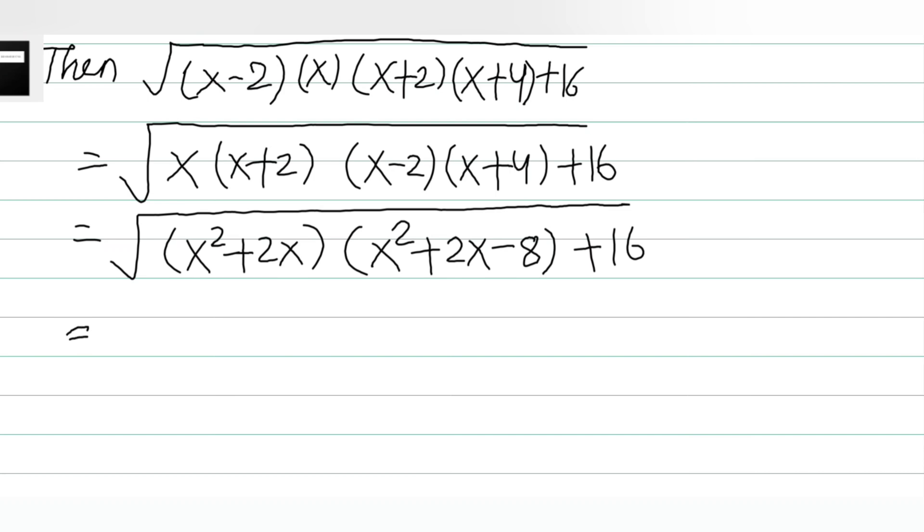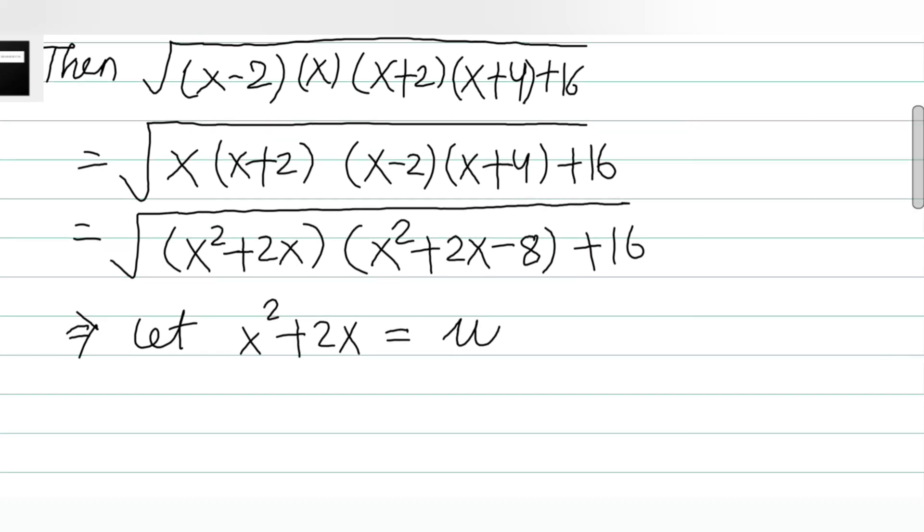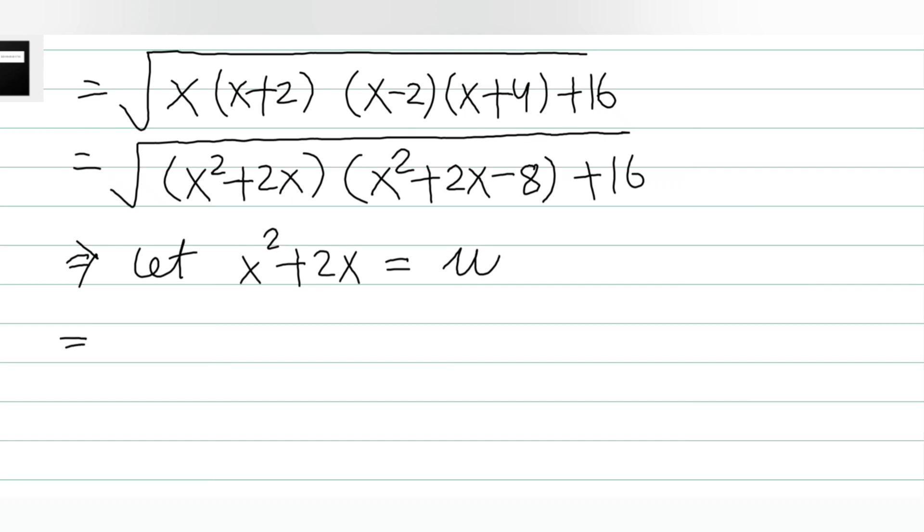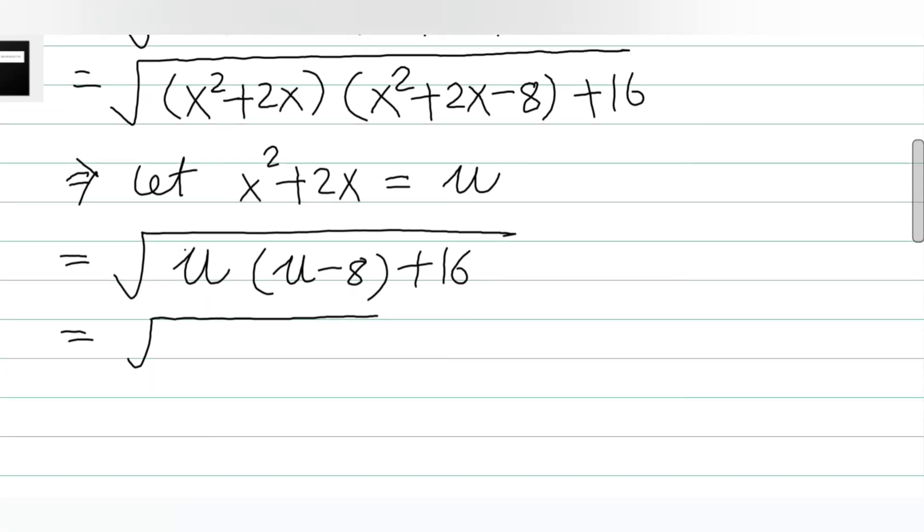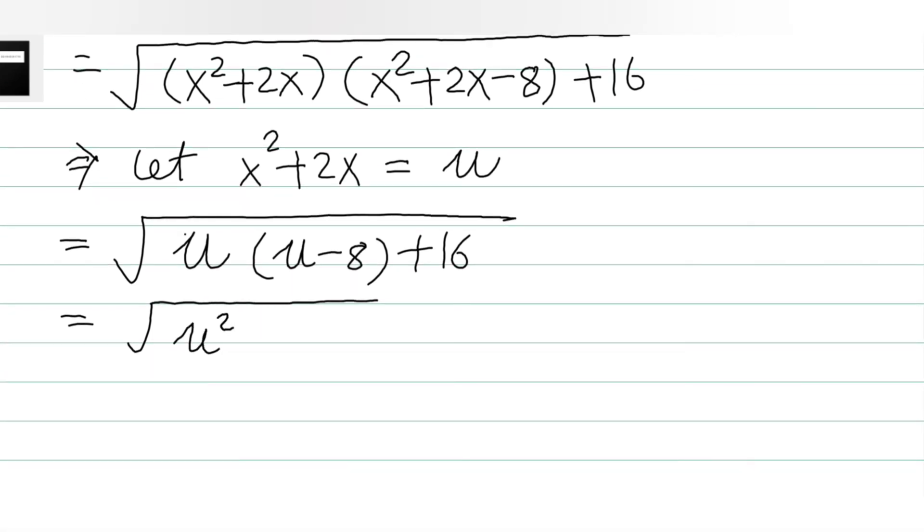Now again, let's take x² + 2x to be u. Then what happens? This equation becomes √[u(u-8) + 16], and after simplification this becomes √(u² - 8u + 16).